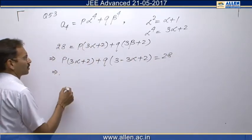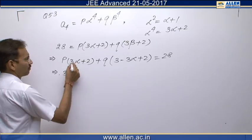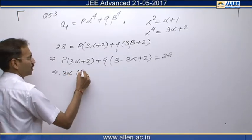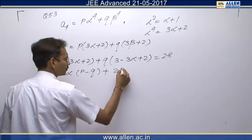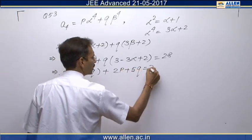We will collect the terms of alpha. 3 alpha we will take common gives us P minus Q plus 2P plus 5Q equals to 28.